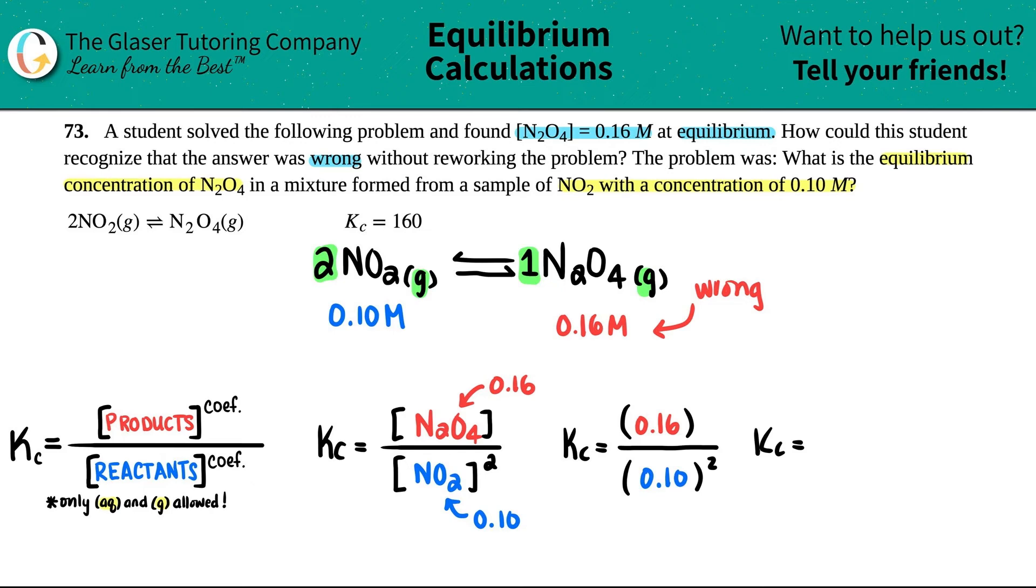Now technically what you're really finding out is a Q value, but what I like to do is—it doesn't really matter how you're labeling it. All you're basically looking for is does this value equal the given? Because a Kc value is a constant for a certain reaction at any given temperature. So this is a constant number. Do you have to memorize Kc values? Absolutely not.